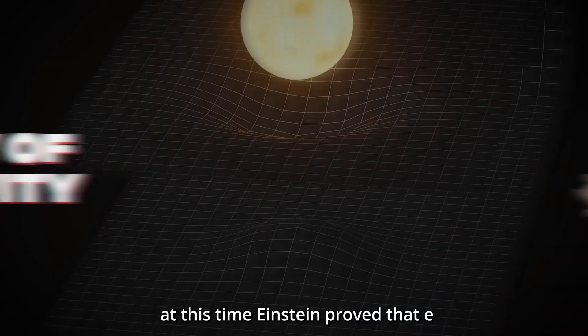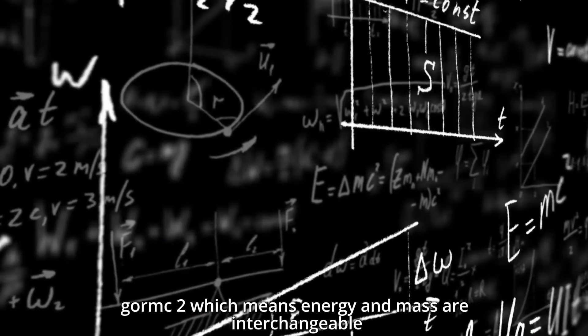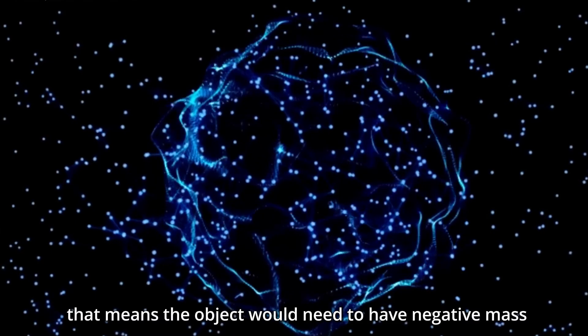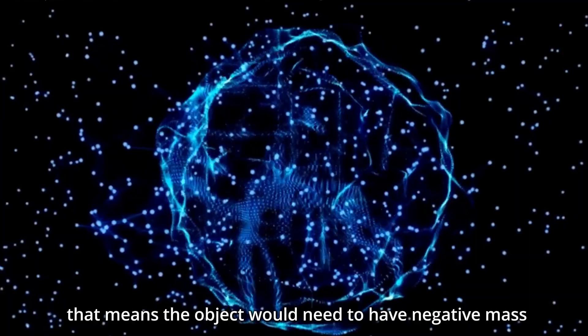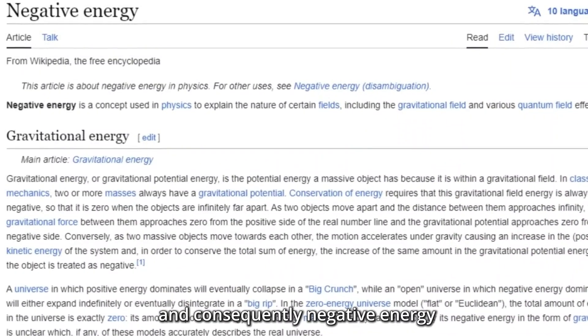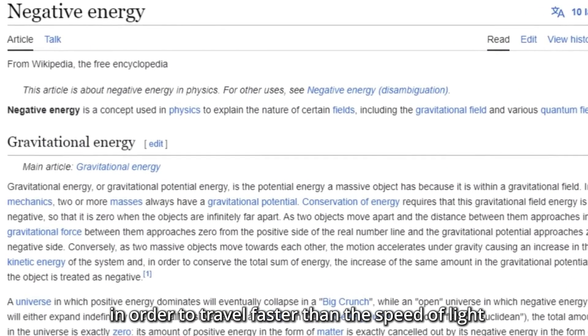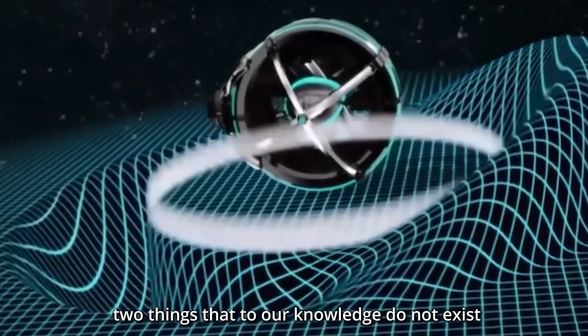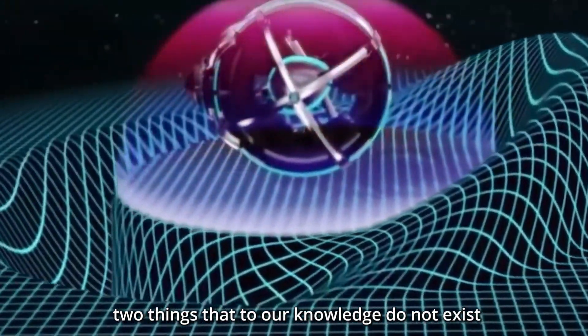Einstein proved that E=mc², which means energy and mass are interchangeable. That means the object would need to have negative mass and, consequently, negative energy in order to travel faster than the speed of light. Two things that, to our knowledge, do not exist.